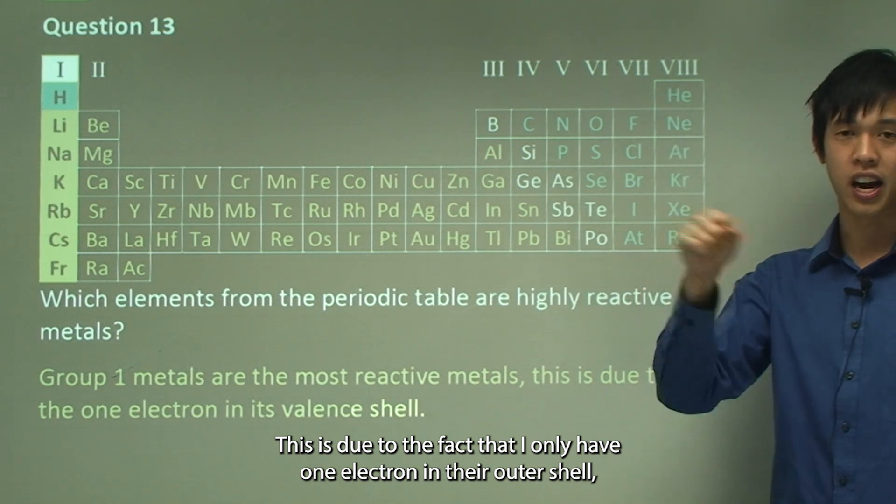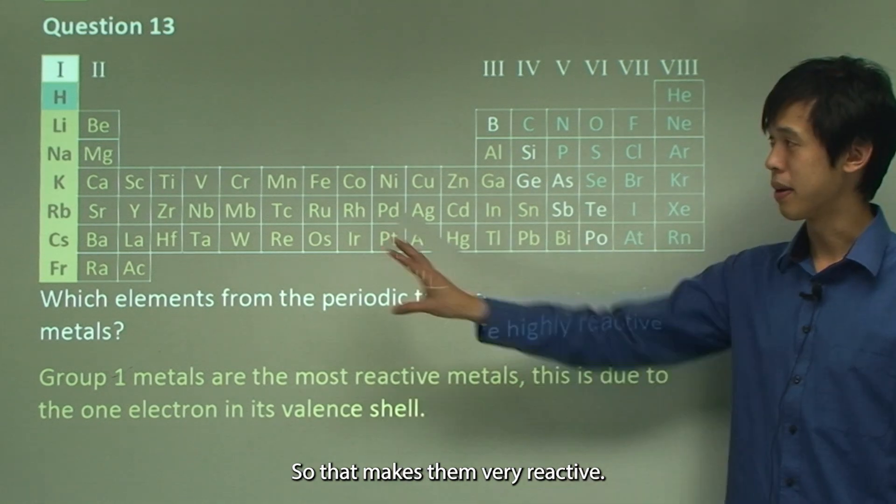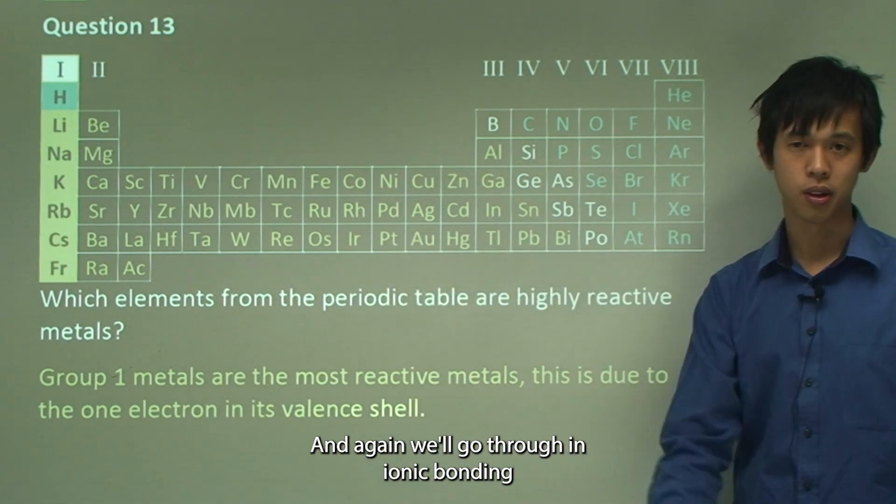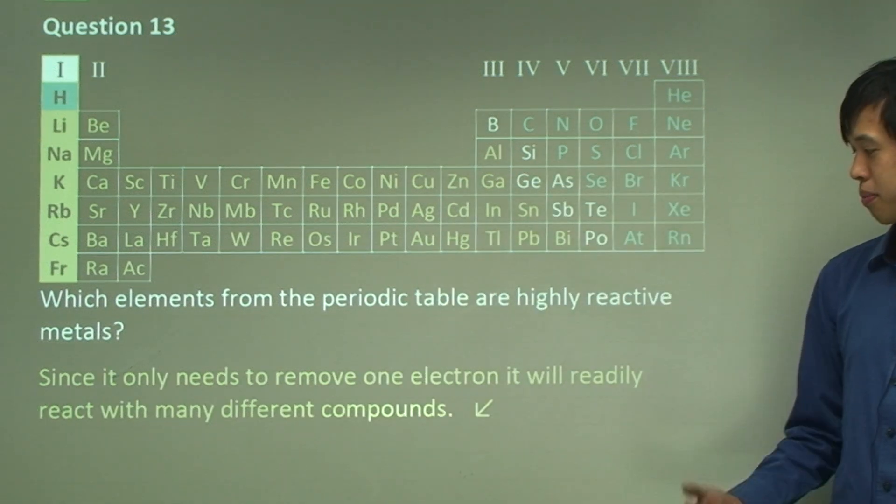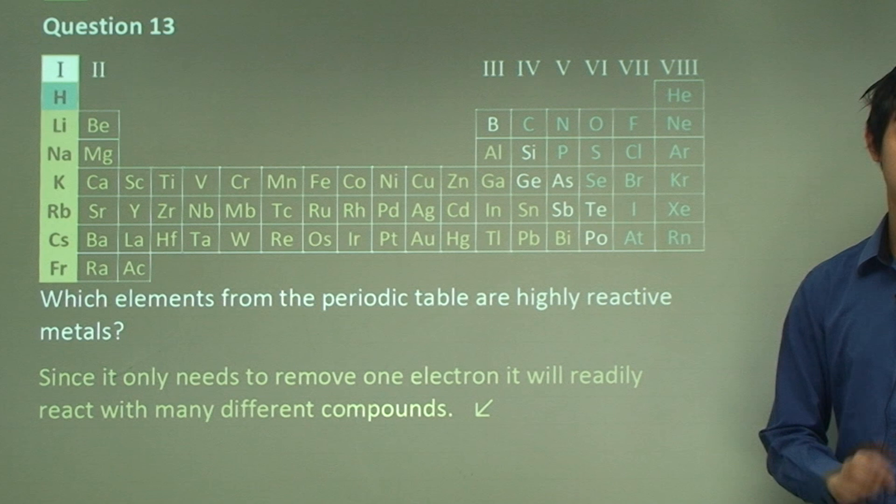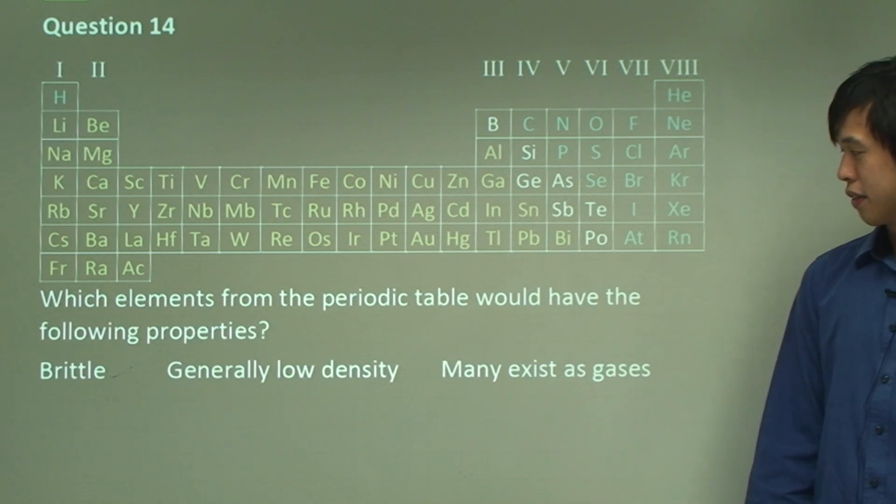This is due to the fact that they only have one electron in their outer shell and so they really just want to get rid of it and react with something. That makes them very reactive. Since it only needs to remove one electron, it will readily react with lots of different compounds. We'll go through in ionic bonding what happens with each of these metals.